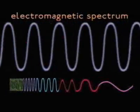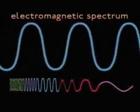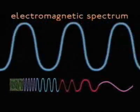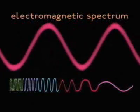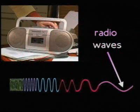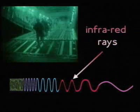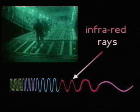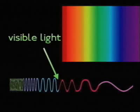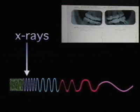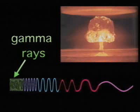Electromagnetic waves are organized into types based on frequency. At one end of the spectrum are radio waves, which have the lowest frequency. The spectrum moves through microwaves, infrared rays, visible light, ultraviolet rays, and x-rays, to gamma rays, which have the highest frequency.